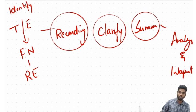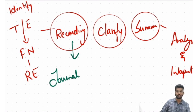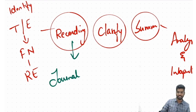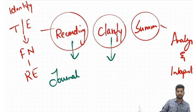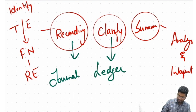Accounting involves recording, classifying, summarizing, analyzing, and interpreting the results. Recording means whenever I find a transaction I record it in a book called the journal. The journal is the book where all transactions are recorded. Classification means all transactions of a similar nature are put under one place, and this is called the ledger.